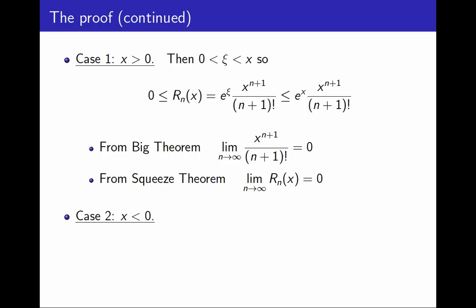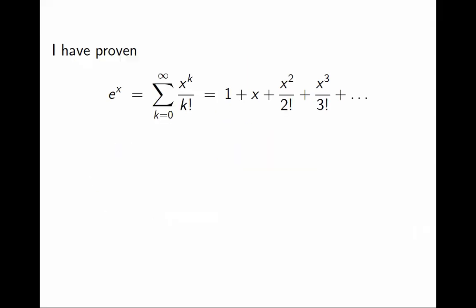On the other hand, when x is negative, I'll leave that as an exercise. It's a very similar argument. So try to reproduce the argument. It's a slightly different bound, but the same argument. And that's it. That completes the proof. I have proven that e to the x is its Maclaurin series.